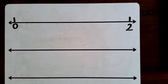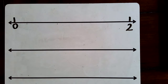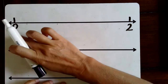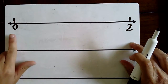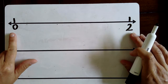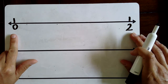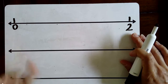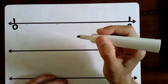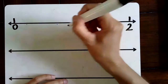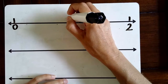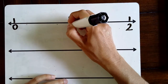On the first number line, we're going to divide it into thirds. So, there's going to be three sections or three lengths between each whole. The first thing I need to do when I look at my whole numbers — I have zero and two — I need to think about what whole number comes between zero and two. The whole number that comes between zero and two is one. So, I'm going to go halfway and put the whole number one.